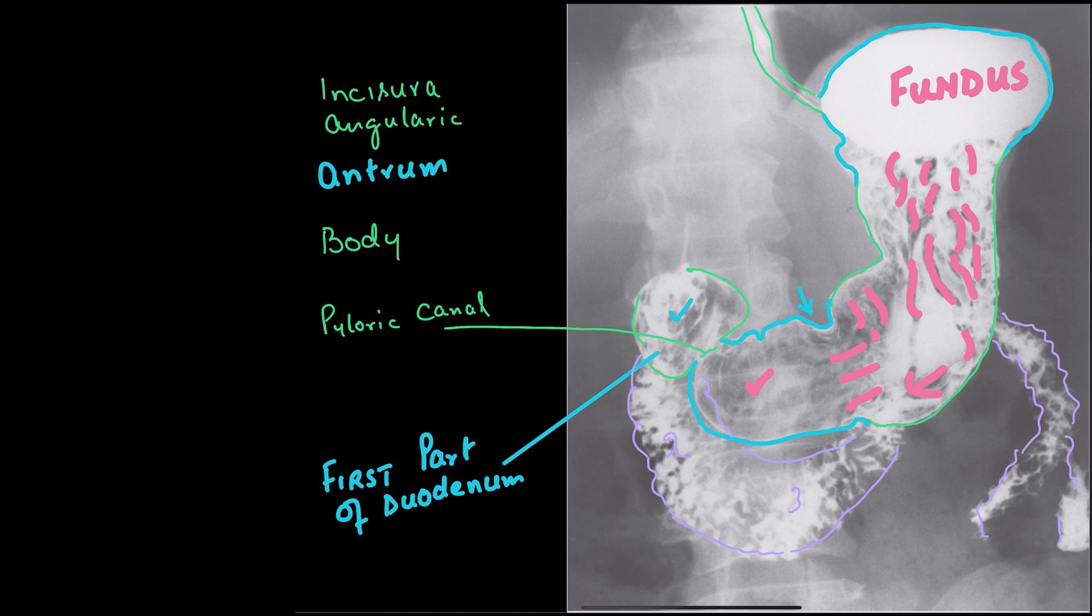Let's recap. You are looking at the esophagus. Then you can see the fundus part of the stomach. This part is the body of the stomach. Then we can see this portion, we call it the antrum.